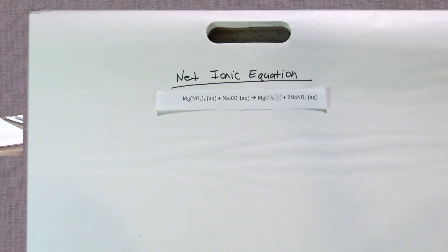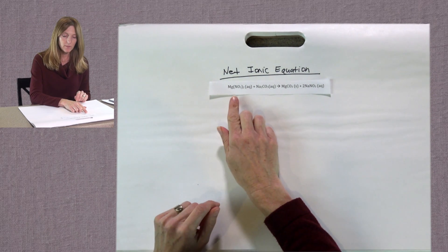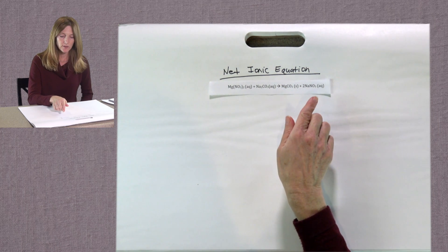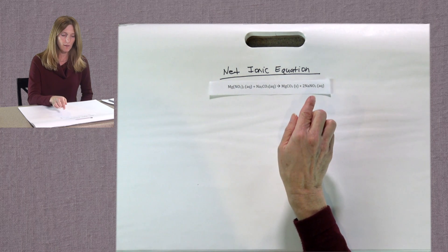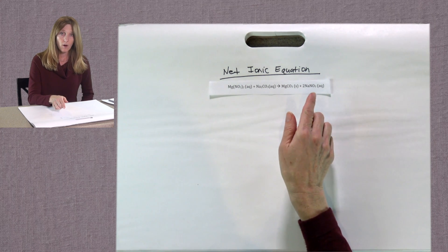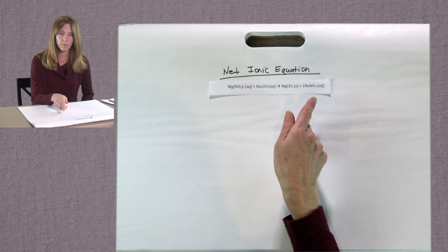Today, I'm going to show you how to write a net ionic equation. To start, we have been given a chemical equation. This is a double displacement reaction, just like we've been talking about in class. And in this chemical equation, all of the compounds are written out in regular compound formulas.